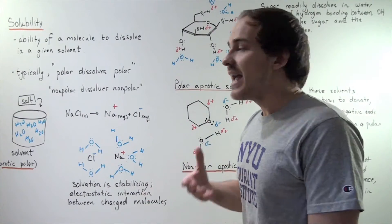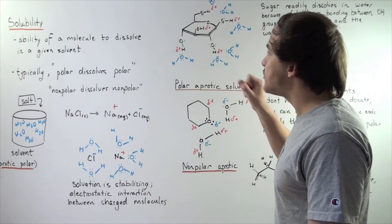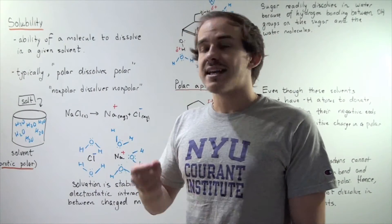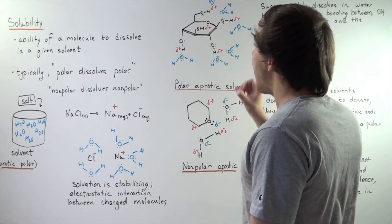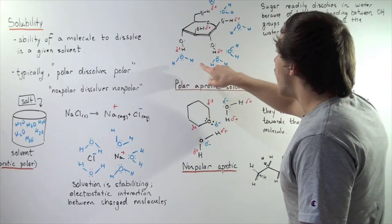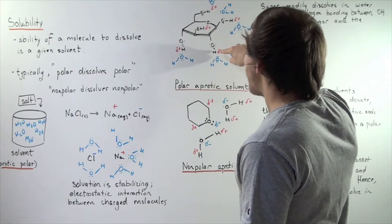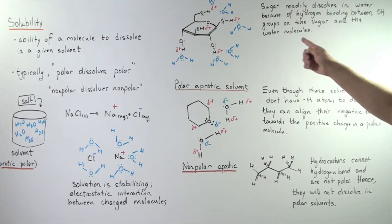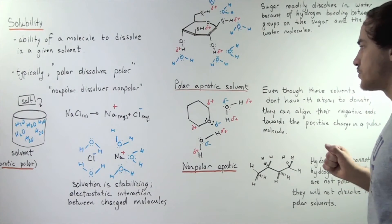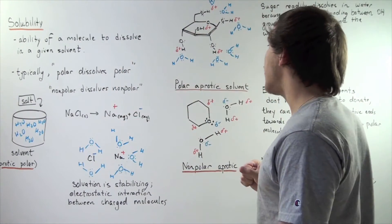Let's suppose we take sugar and place it in our container filled with water. Sugar also contains OH bonds, or OH groups, which means sugar is protic — it can donate H atoms and contains polar bonds. If we place sugar inside our container, it will also dissolve because the water will solvate our sugar. The water molecules orient themselves to stabilize the partial positive charges on the H atoms of the hydroxyl groups. Sugar readily dissolves in water because of hydrogen bonds between OH groups on the sugar and the water molecules — polar dissolves polar.